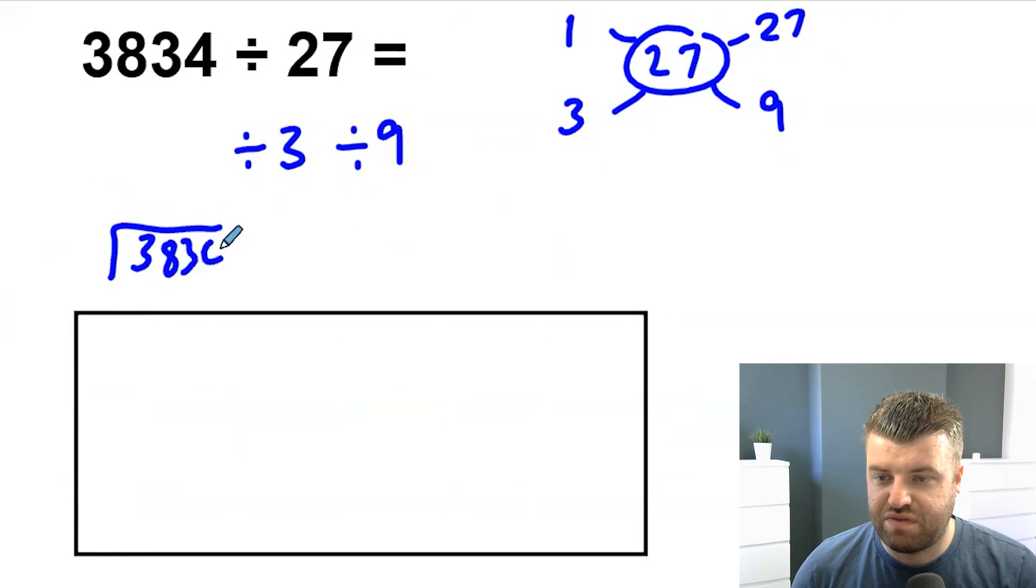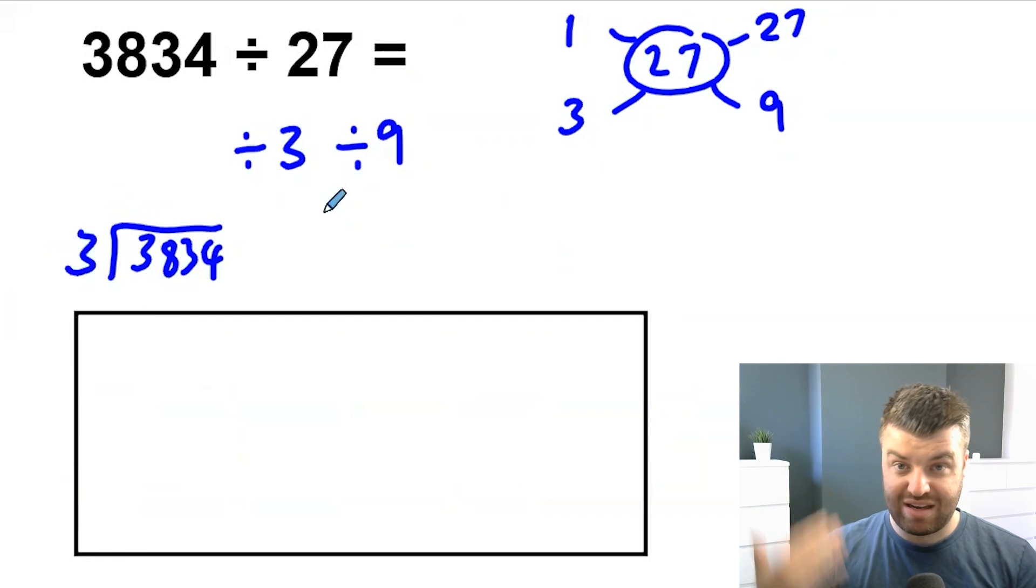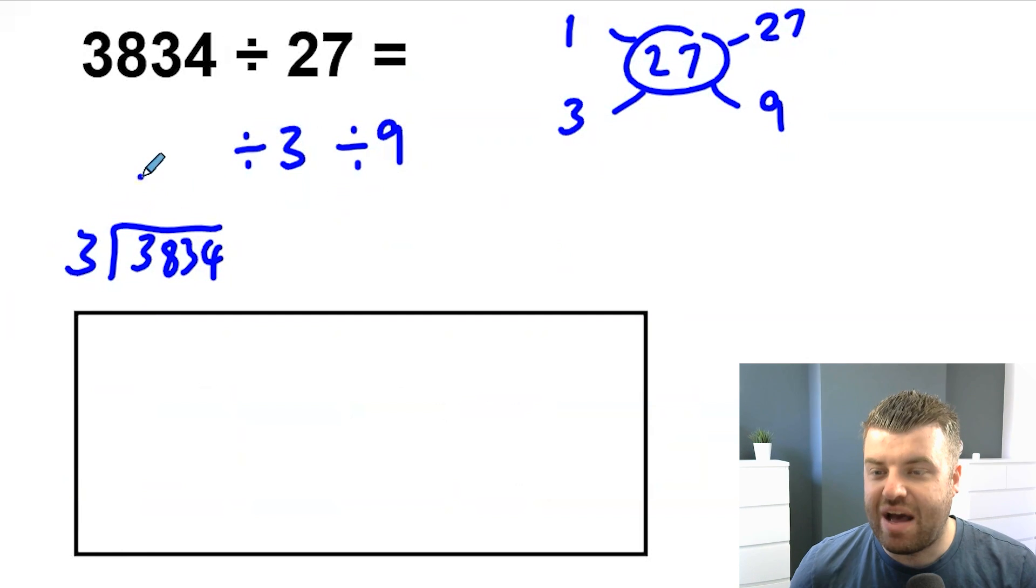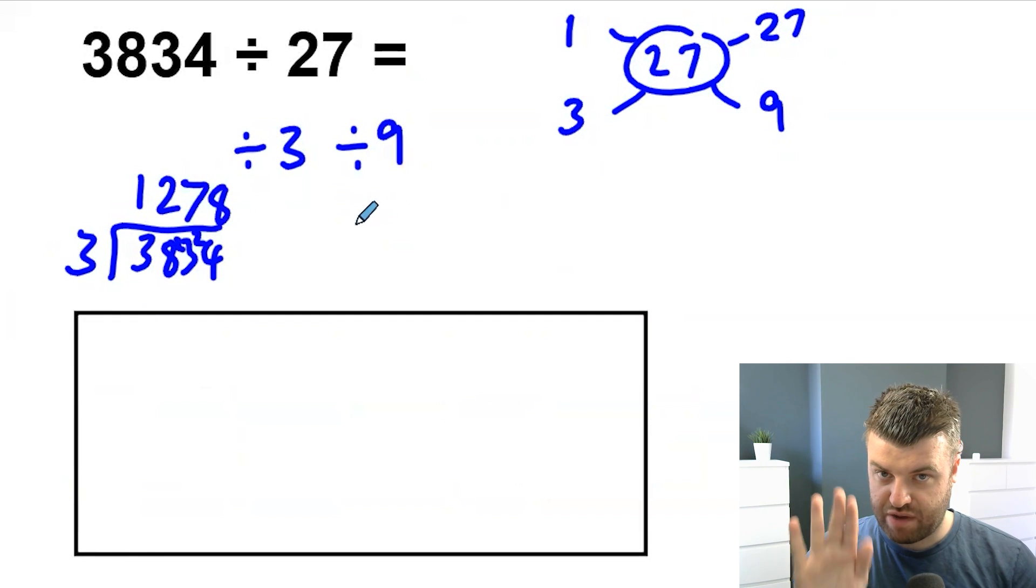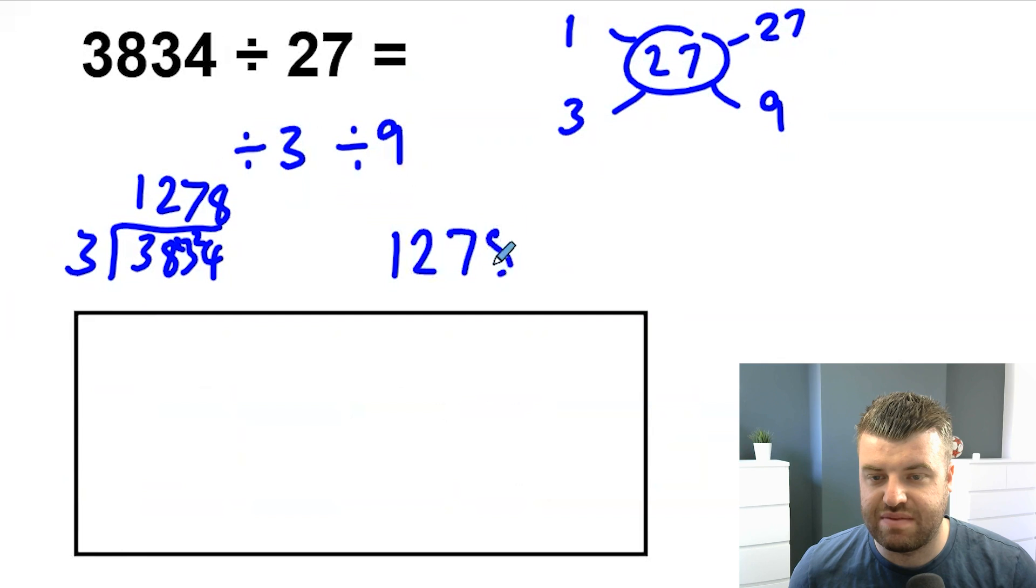3,834. Hopefully this is easier than listing your 27 times table and doing long division. 1 and then we have 2 lots in there with 2 left over. Then we have 7 lots with 2 left over and we have 8. So halfway through our question now, we're going to take the answer, 1,278, and we're going to divide that by 9.